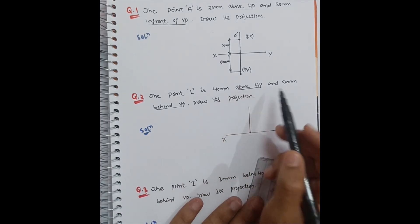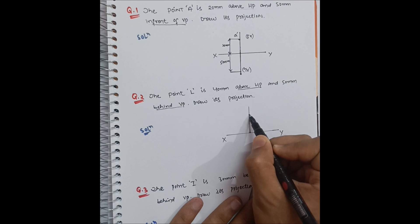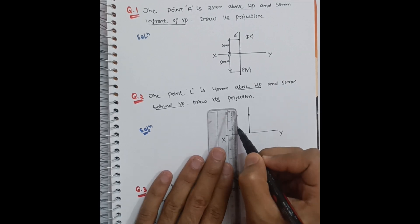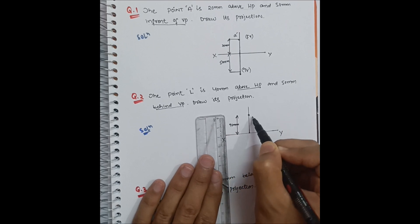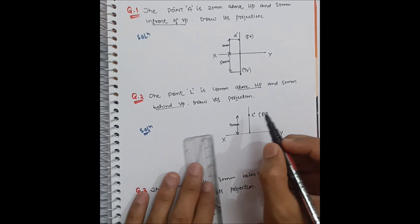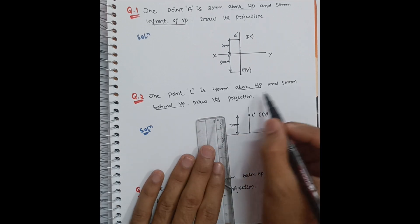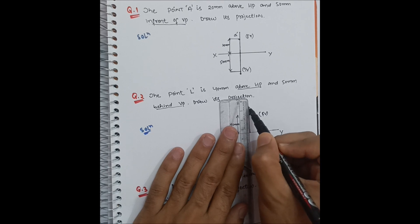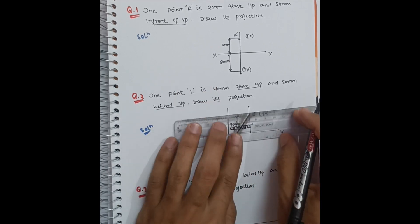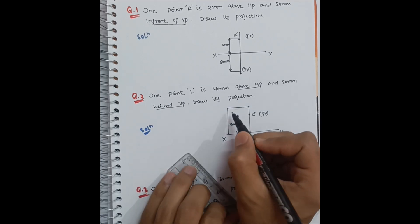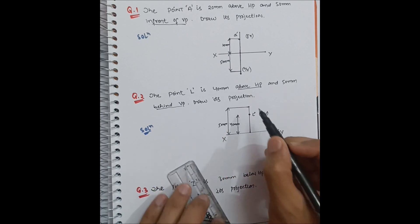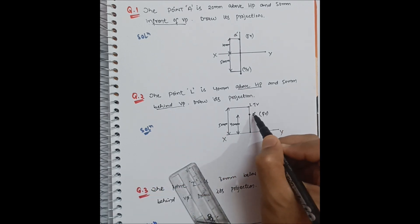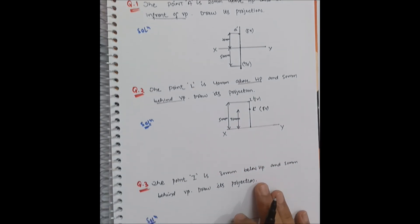Let me draw this. The front view is 40mm above HP, so it will be here — call it L dash, the front view. The top view is on the same upper side, and it is 50mm behind VP, so it will be 50mm above the reference line. That gives us L dash as the front view and L as the top view. This completes the second quadrant problem.